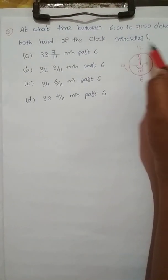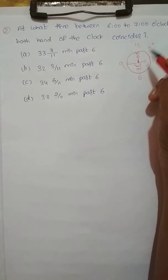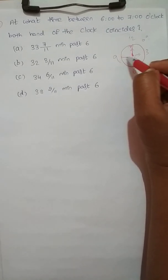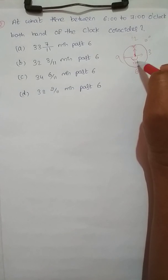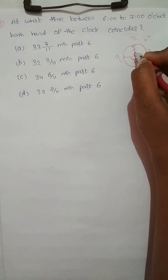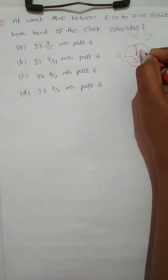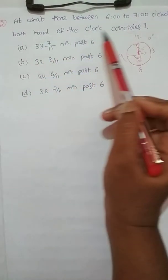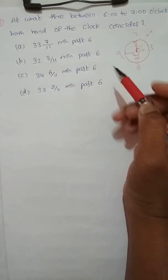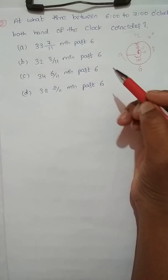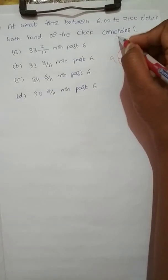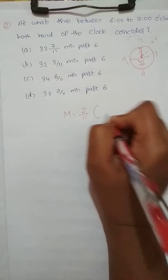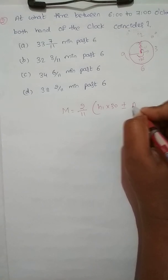When both hands are at 3 and 12 respectively, the angle is 90 degrees — that is a right angle. Now for the question: both hands of the clock coincide between 6 and 7, so coincide means 0 degrees. The formula is M = 2/11 × H1 × 30 ± A degrees.